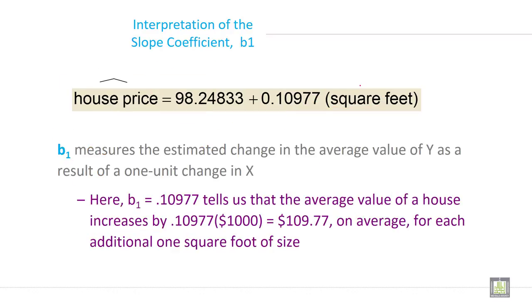Now how you can interpret b1? Here b1 is 0.10977 square feet. It is also called the coefficient or the slope of independent variable.